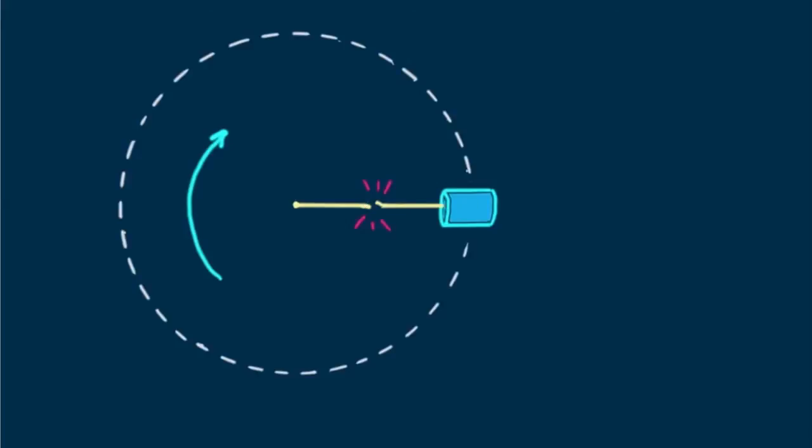Suppose the string breaks. In what direction will the can travel? Will it travel outward like this? No way! With no force holding it in a circle, in accord with Newton's first law, it will move in a straight line. A straight line that is tangent to its path at the moment the string breaks. In fact, we say the velocity of the can moving in a circle is tangential velocity. Velocity that is tangential to the path.